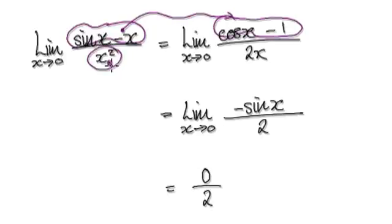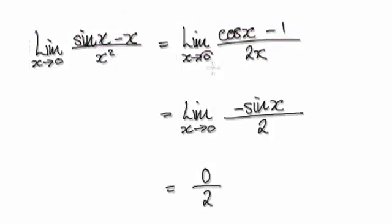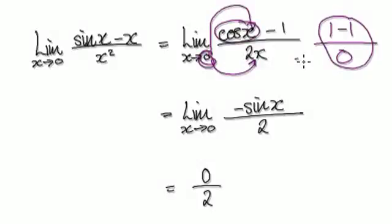And then differentiate the denominator — that gives you this. So the limit of the original expression equals the limit of this new expression. Now plug in x = 0: cos of 0 is 1, take away 1, and then put 0 into the denominator — so you've got 0 down here.